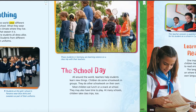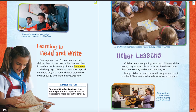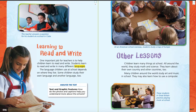So that school day sounds a lot like ours. And on the next page, we have another picture with a caption: this teacher answers a question for his students at a school in Cuba. Learning to read and write is our heading. One important job for teachers is to help children learn to read and write. Students learn to read and write in many different languages. The language children use at school depends on where they live. Some children study their own language and another language too. At an American school overseas, students study a map of Europe — so this is an American school, but it's not in America. It's in another country, but they still study American studies.